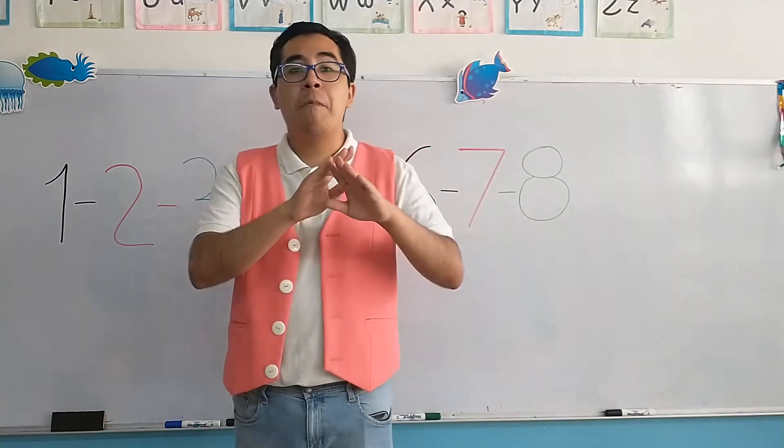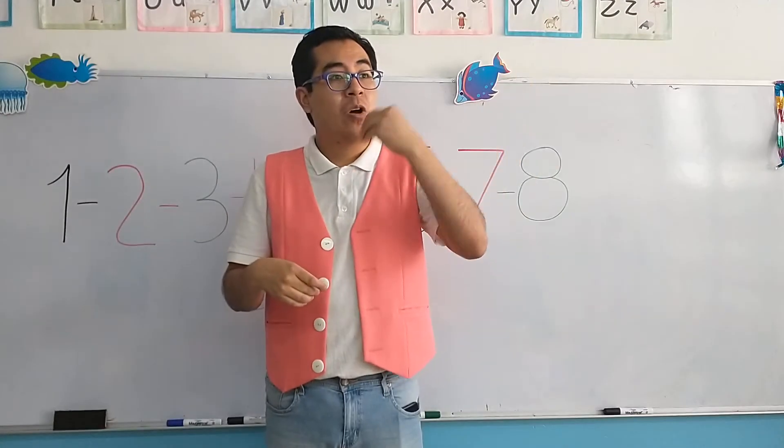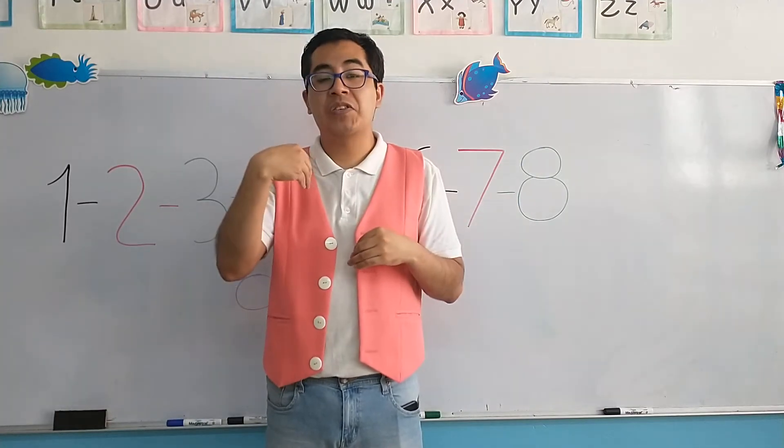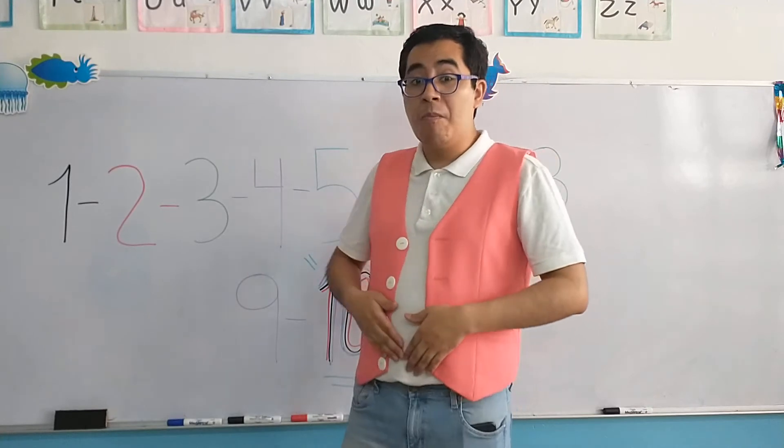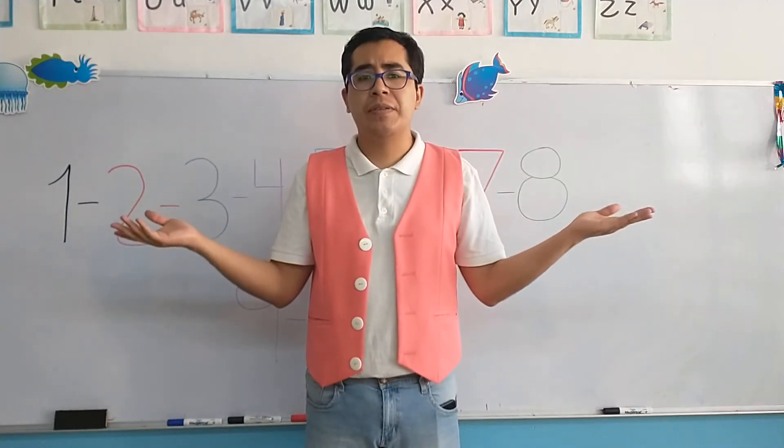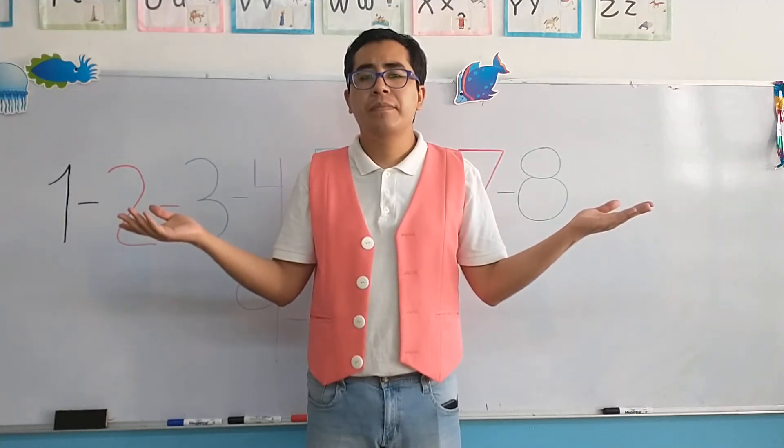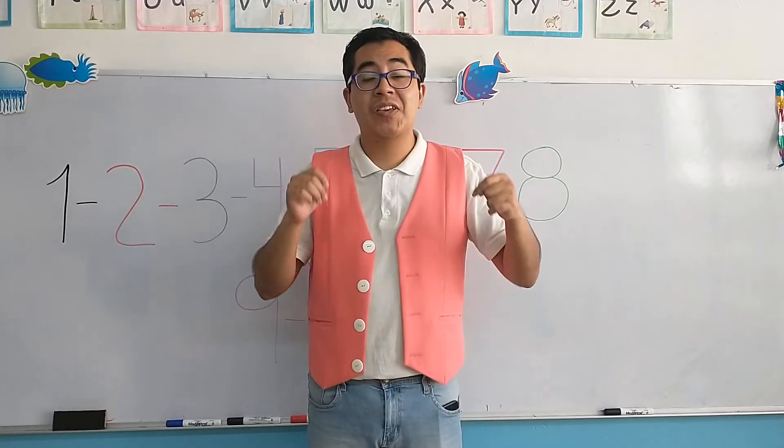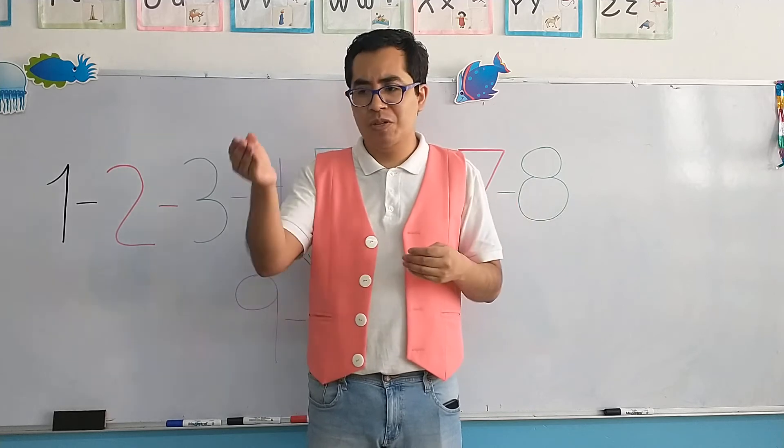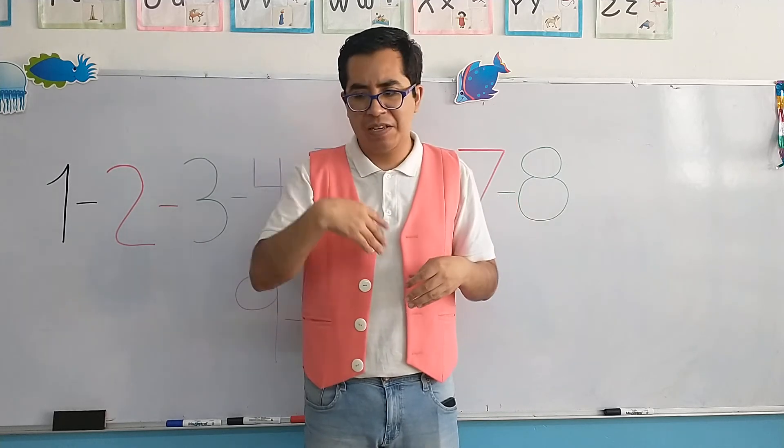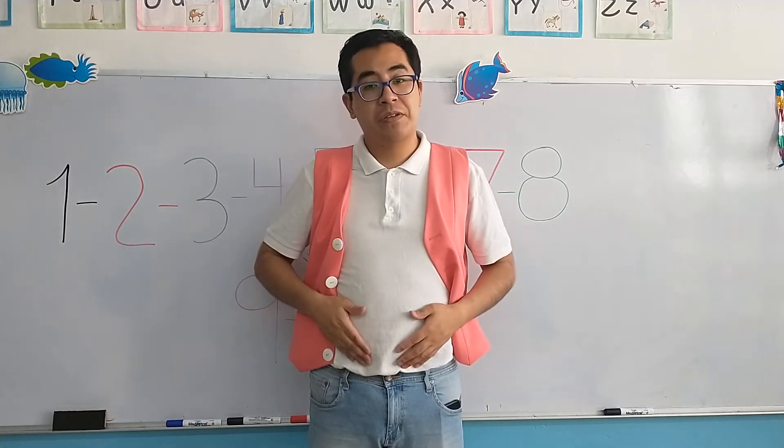This number, he loves hamburgers. He loves hamburgers. He loves hot dogs. He loves pizza. That's why he has a big stomach. What number is it? Number five. Number five. Excellent. Recuerden que el number five es el número que le gusta comer, le gustan las pizzas, las hamburguesas y por eso pues está llenito.